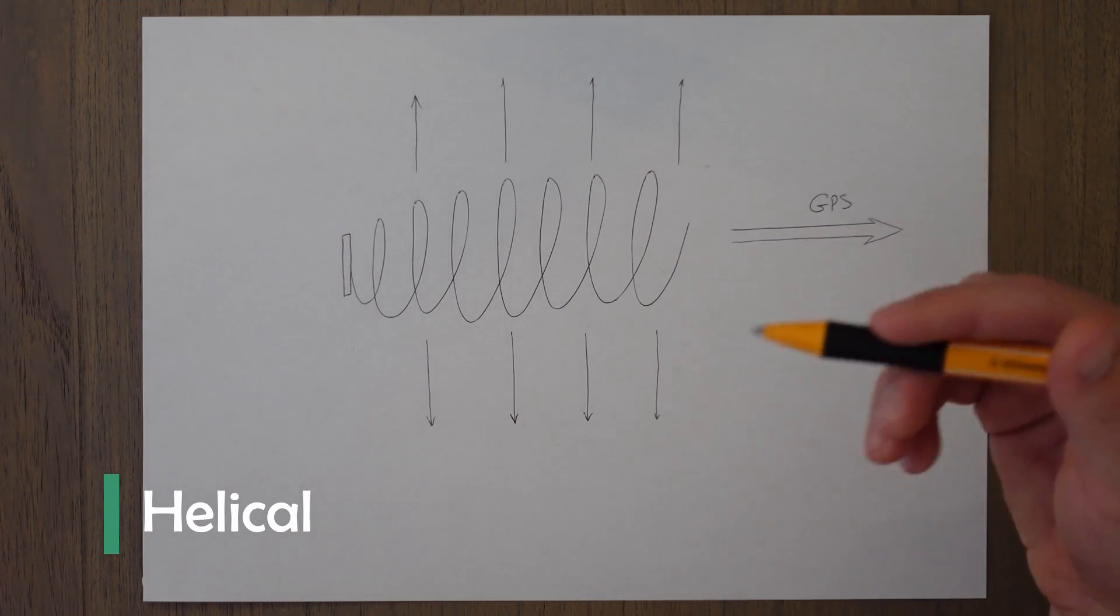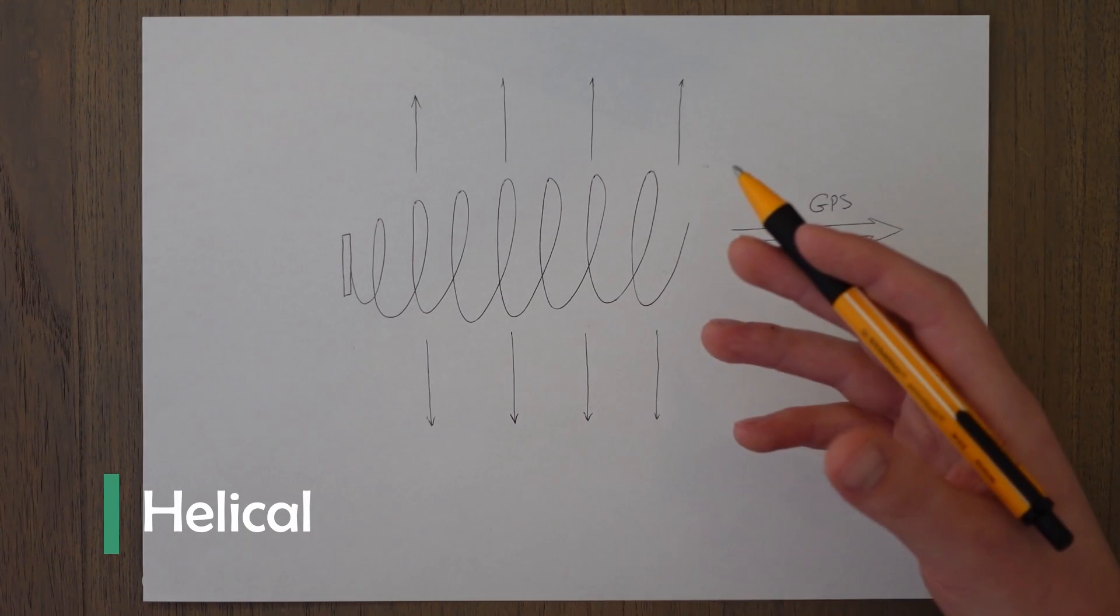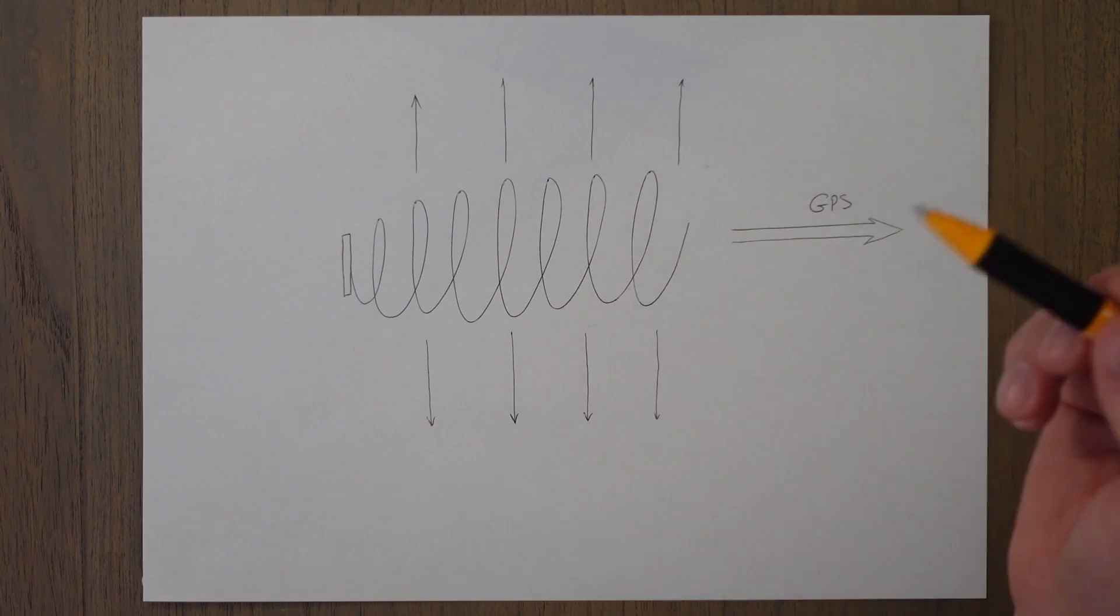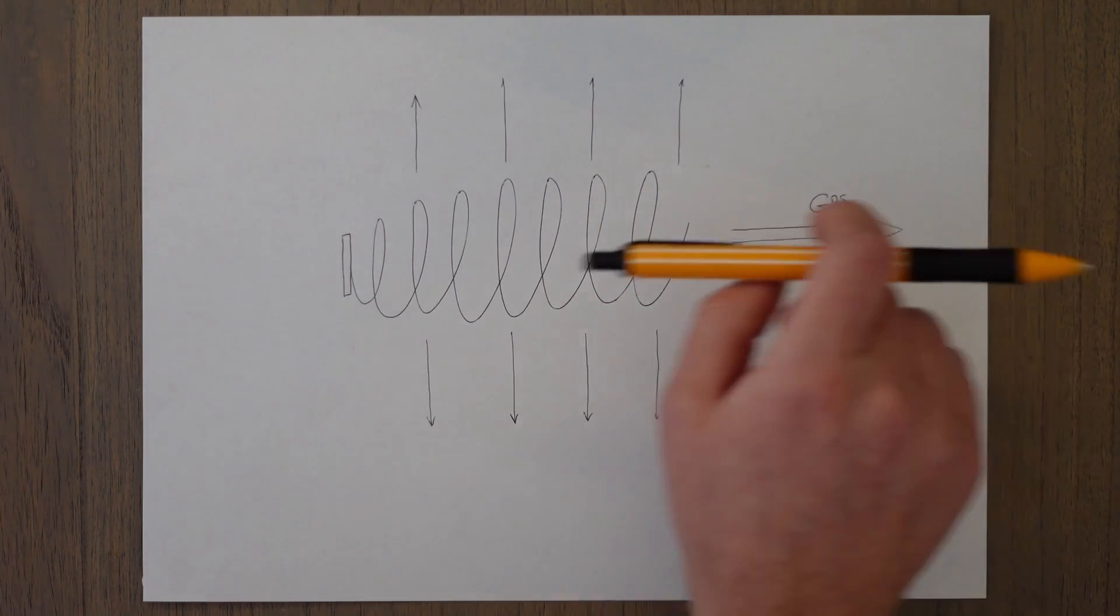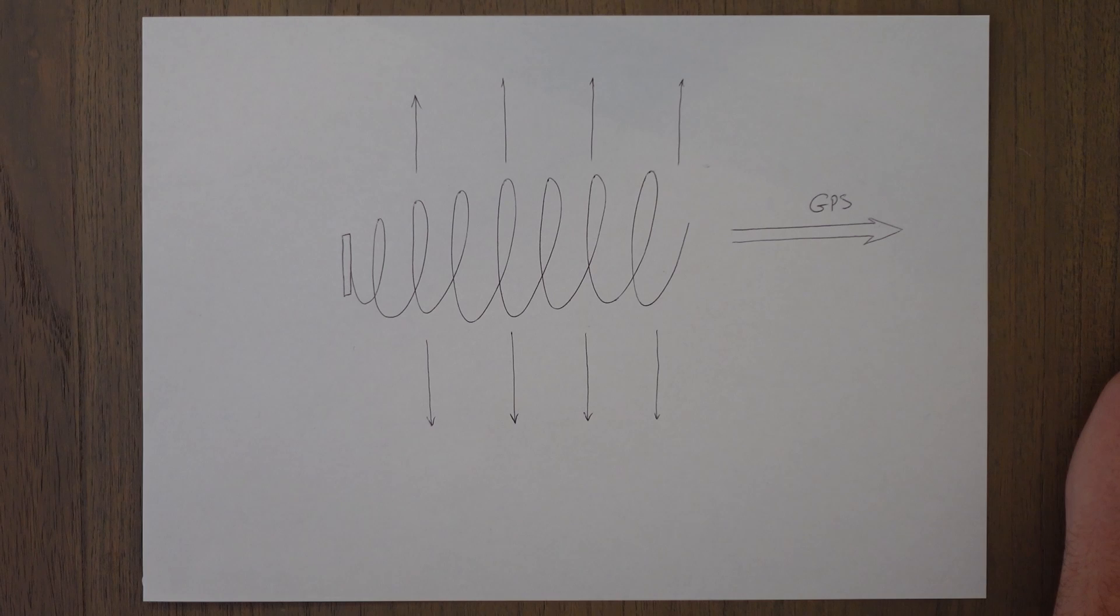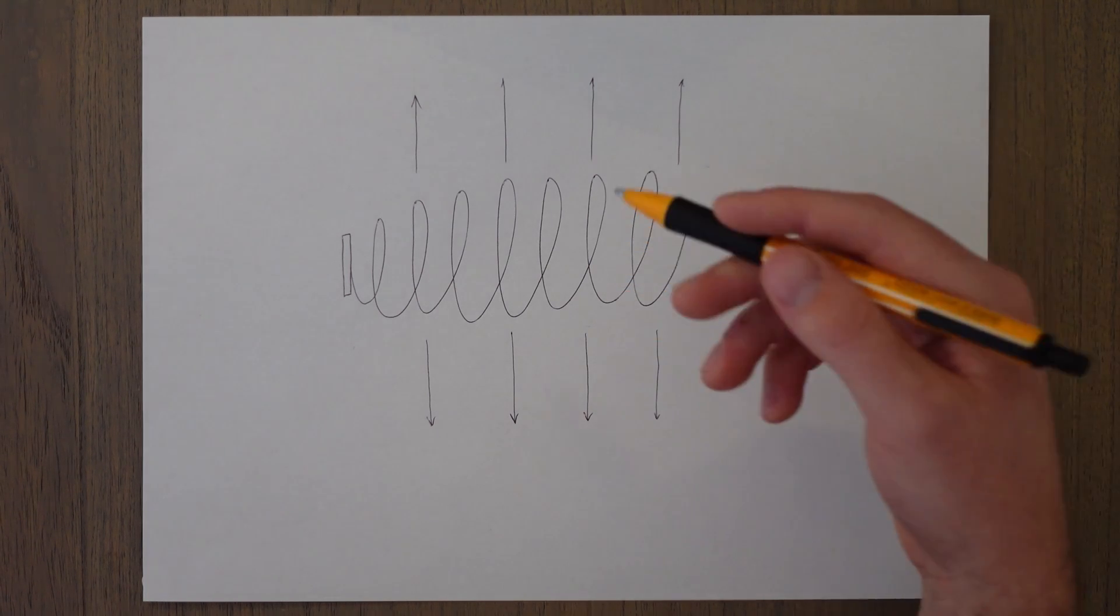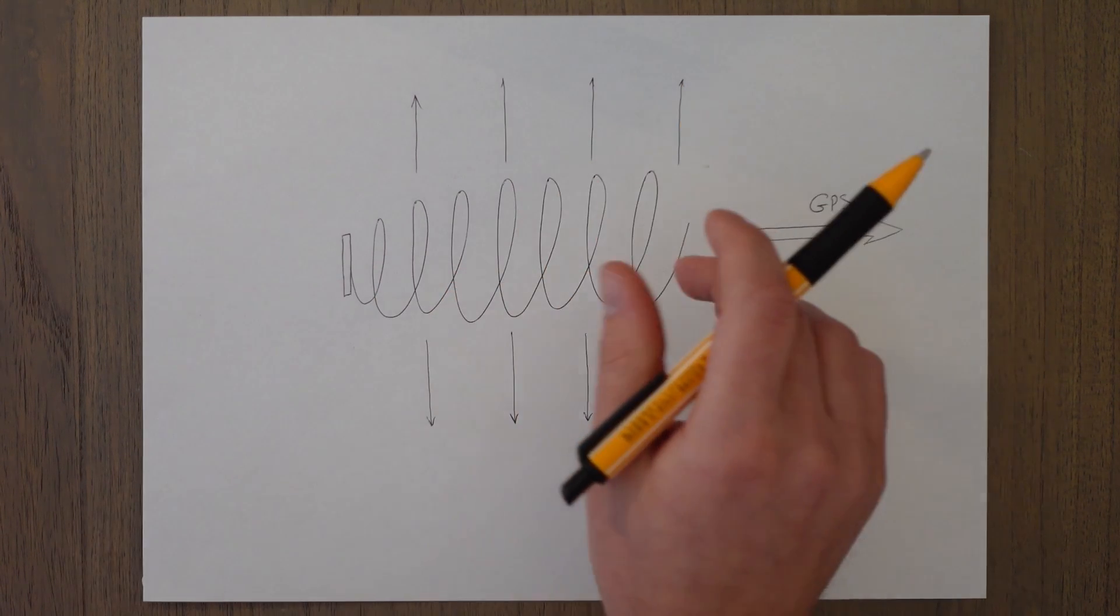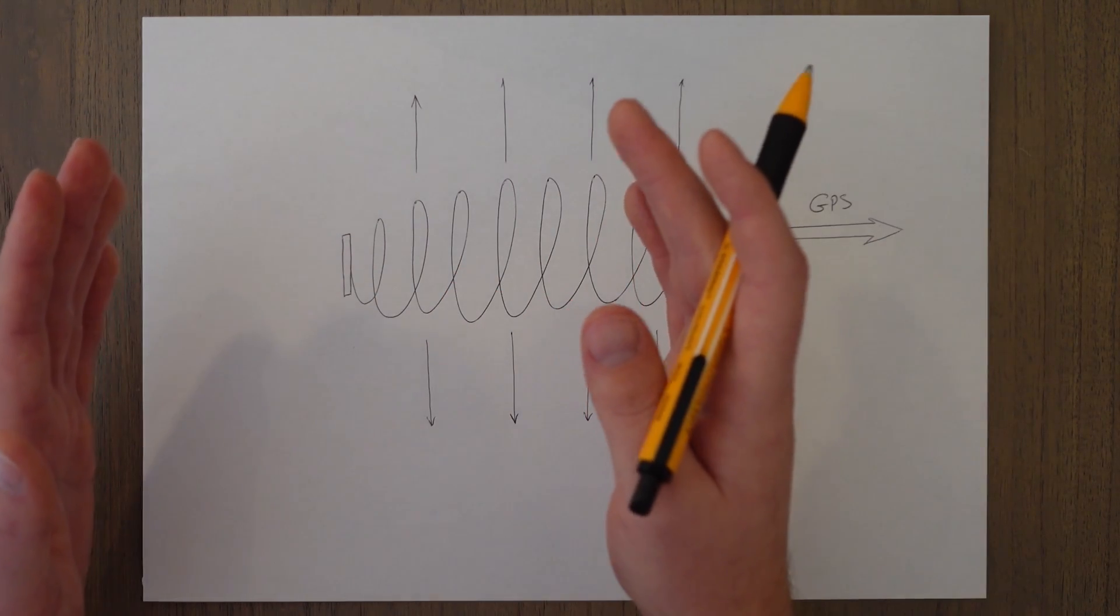A helical antenna can produce a circularly polarized radio wave used either omnidirectionally much like the simple length of wire or in a very directional fired out the end way which is used for GPS signals. The benefit of a helix is that the same sort of signals can be picked up by a helix antenna as a straight whip antenna but a lot less length is required.